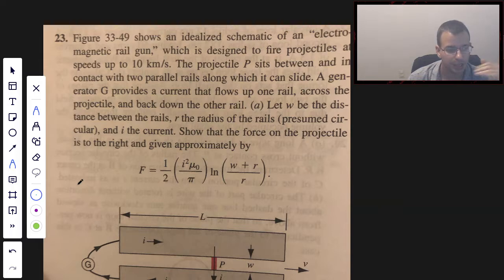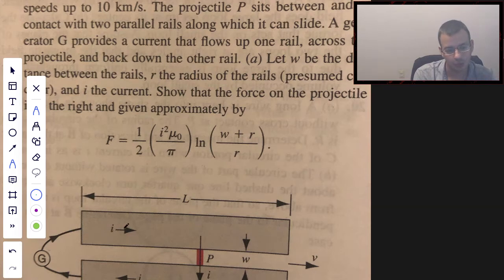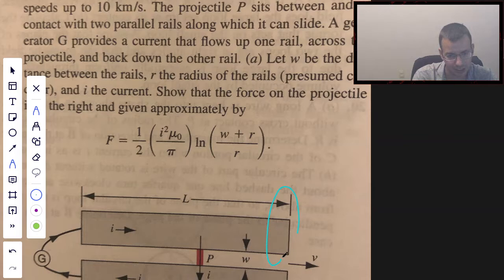We've done similar problems, but usually we have a uniform magnetic field coming up out of the page. Now in this case, we're going to do the magnetic field. So we have current going to the right, but it's because everything has slipped. Magnetic field to the right, wrap your fingers, and we get a magnetic field that goes like this. So the top rail is going to create a magnetic field going into the board.